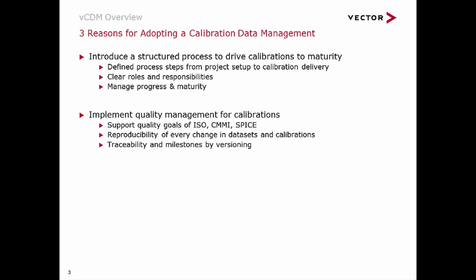The final quality of an embedded control system is determined by its software quality and by its calibration quality. While software development adopted quality procedures long ago, the same diligence is often neglected for calibrations. A CDM system enables you to implement the same quality procedures as for software development. Tracking changes of every single parameter across all software versions helps to achieve this goal.